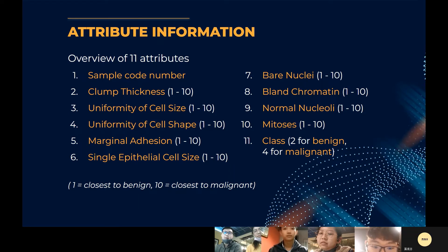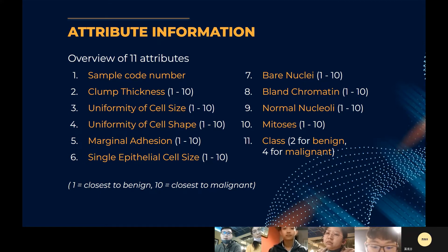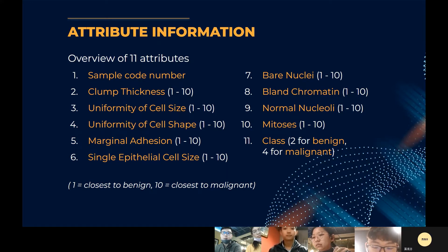There are 11 attributes in the dataset. The first attribute is the sample code number, which is the ID. The second through tenth attributes are: clump thickness, uniformity of cell size, uniformity of cell shape, marginal adhesion, single epithelial cell size, bare nuclei, bland chromatin, normal nucleoli, and mitosis — each ranging from 1 to 10, where 1 is closest to benign and 10 is closest to malignant. The last attribute, class, is coded as 2 for benign and 4 for malignant.